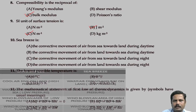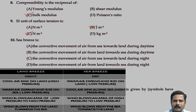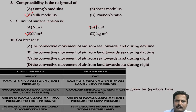Sea breeze is the convective movement of air from sea towards the land during the daytime. You must know the difference between land breeze and sea breeze: land breeze occurs at night, whereas sea breeze occurs during the day. The specific heat capacity of water is very high, so it takes more time to heat up. During daytime, warm air rises over land and cool air flows in from the sea — that is sea breeze. At night, water cools slowly due to high specific heat capacity, so land breeze occurs. The correct option is E.